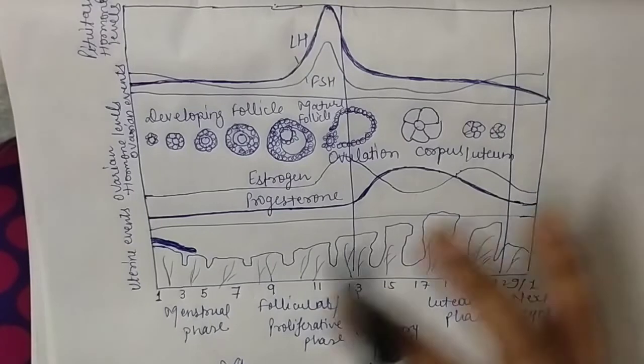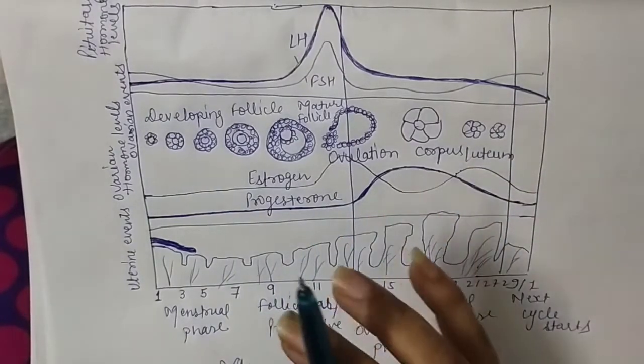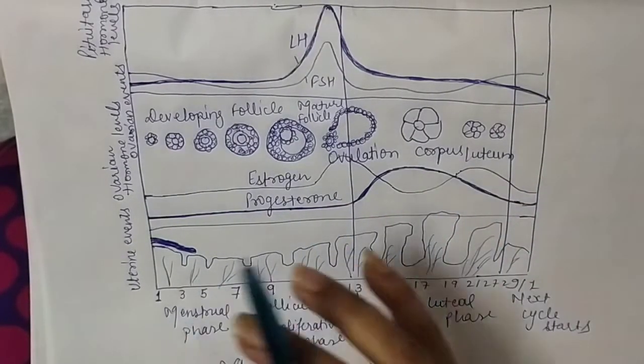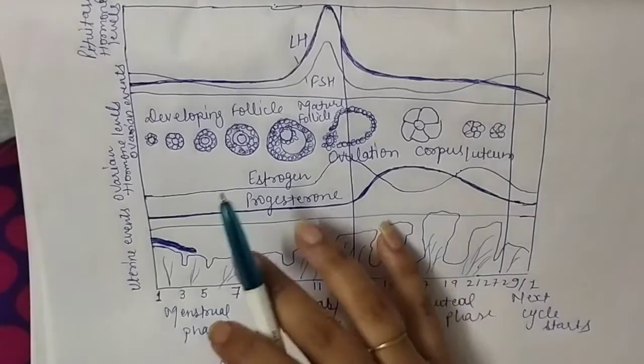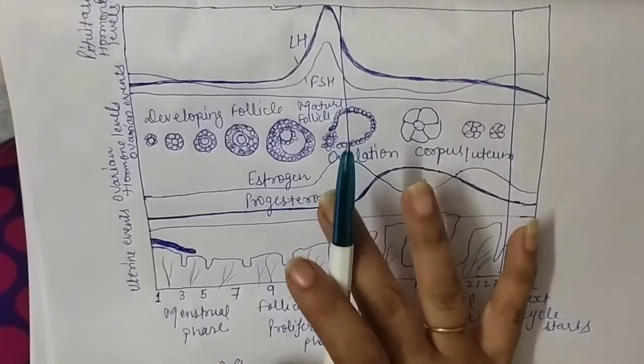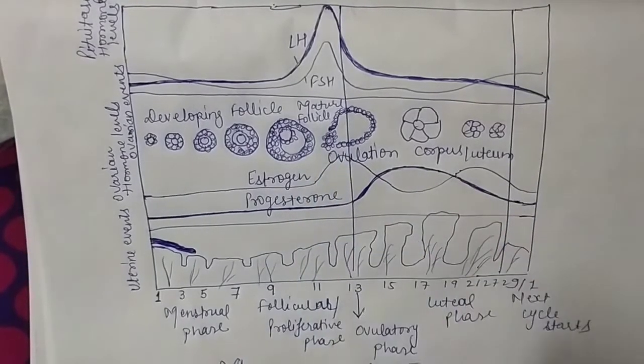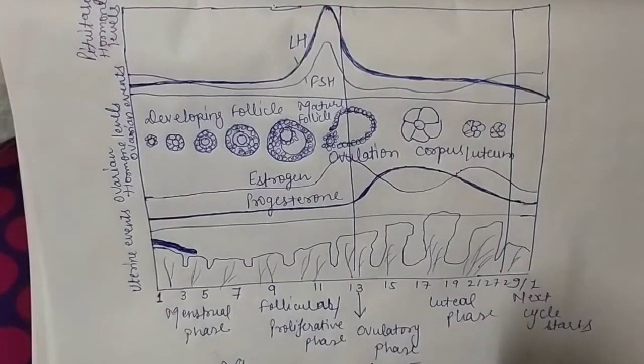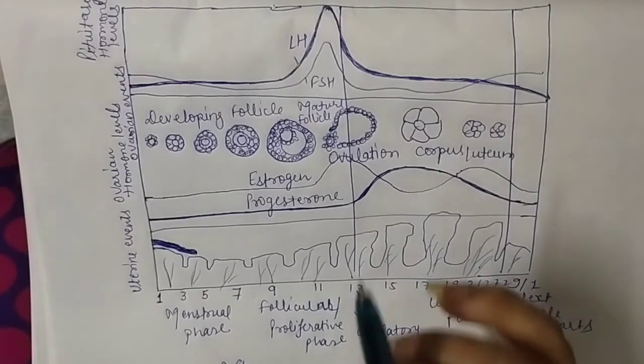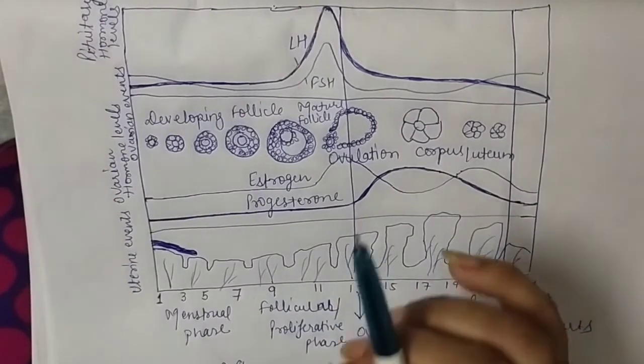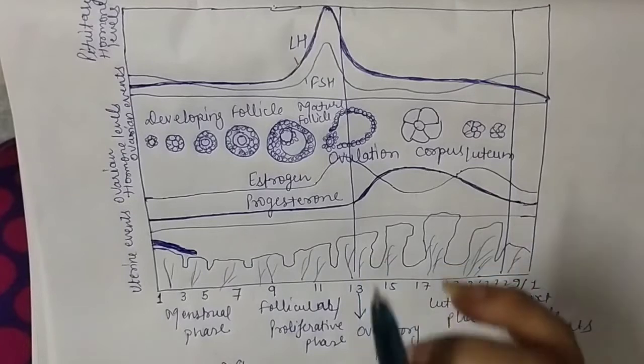Basically in this cycle, many changes are going on inside the ovary. These are very important because they decide the fertility of the female. The menstrual cycle is a main indicator of puberty, meaning the female is now able to reproduce and give birth to a new baby.